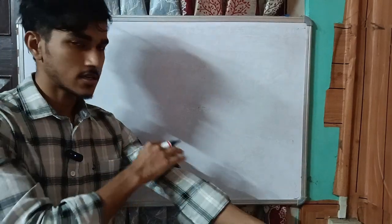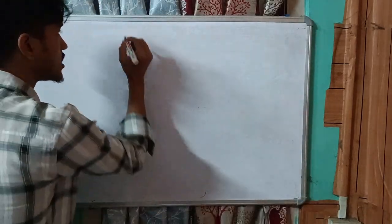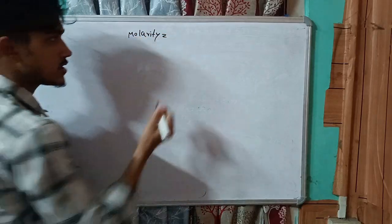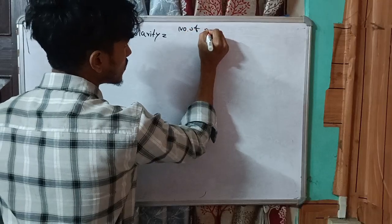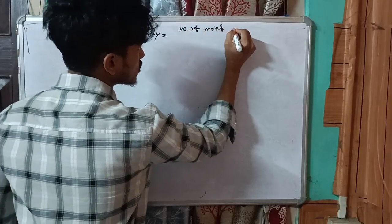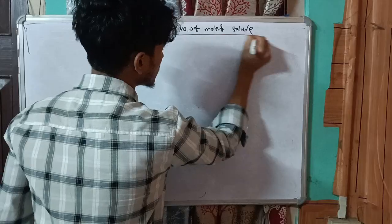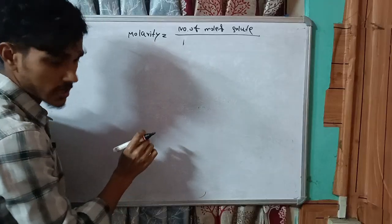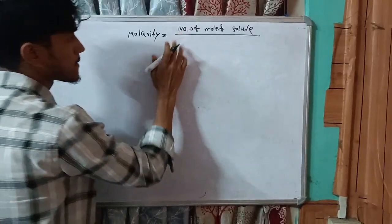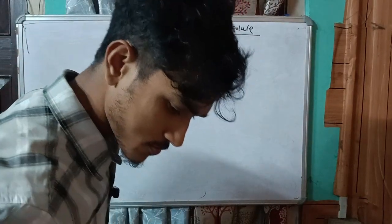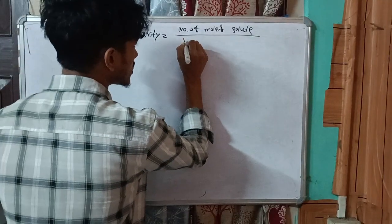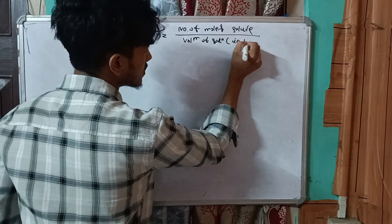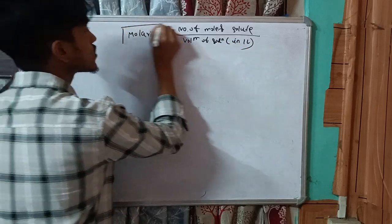Hello everyone. Molarity definition: molarity is the number of moles of solute in 1 liter of solution. The formula is: number of moles of solute divided by volume of solution in liters.